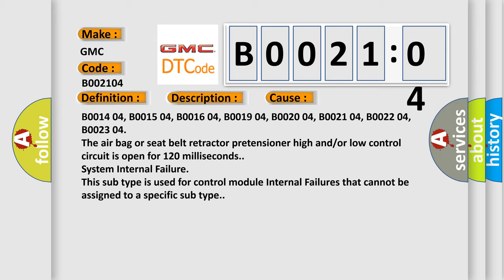B001404, B001504, B001604, B001904, B002004, B002104, B002204, B002304. The airbag or seat belt retractor pretensioner high and/or low control circuit is open for 120 milliseconds.